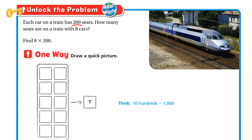How many seats are on a train with eight cars? The first car has 200 seats, the second car has 200 seats, and so on. This means repeated addition or multiplication — instead of adding 200 eight times, we can just multiply 8 by 200.